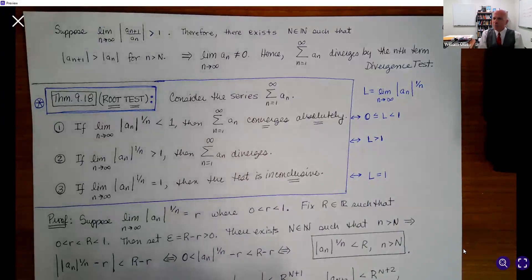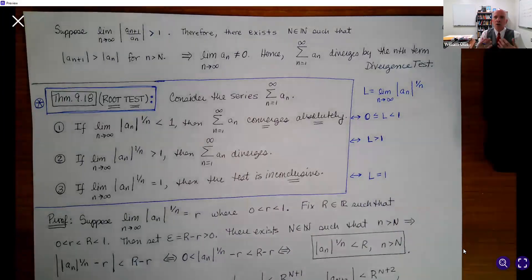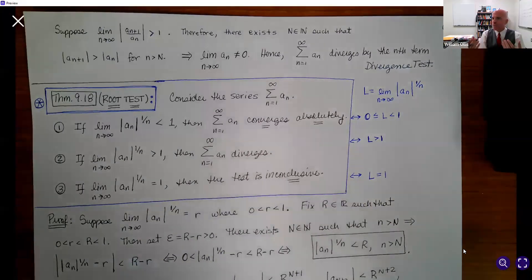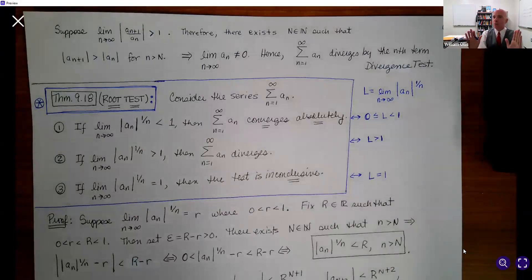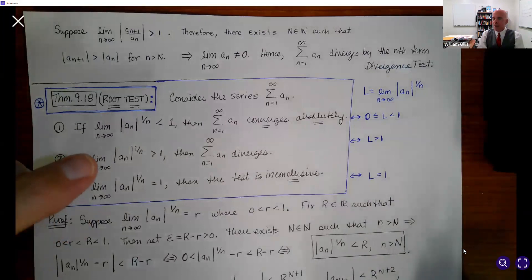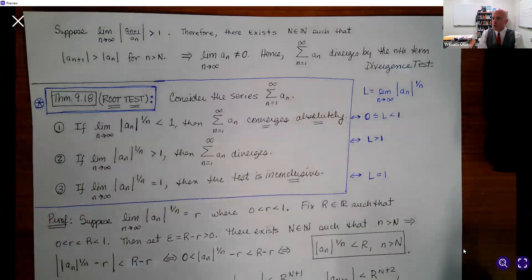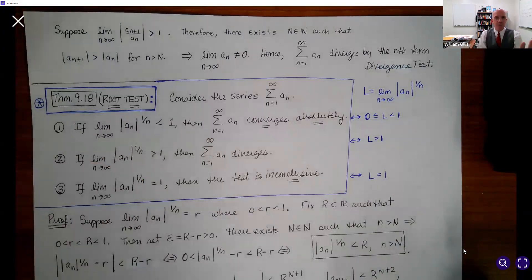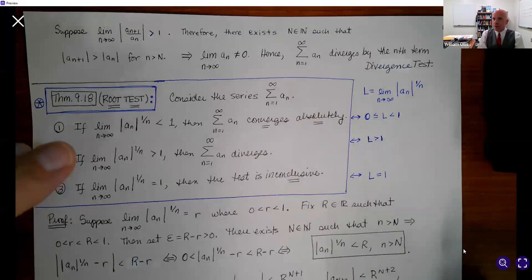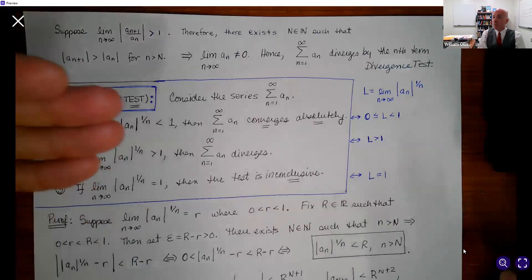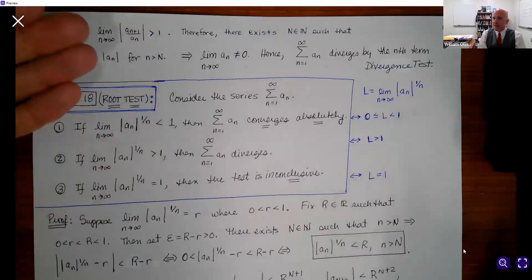Students might say they could just get away with applying the ratio test, but the root test gives you an additional choice. If you have fractions raised to nth powers or some integer power of n that would be easily simplified with an nth root, the root test is very nice. This is simply giving you additional power and flexibility when you're applying convergence tests, and you always have the choice to select one test over the other.